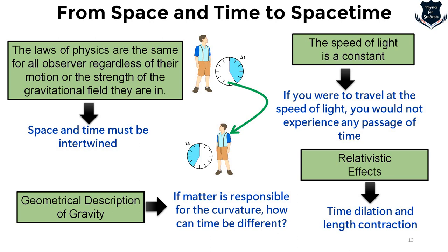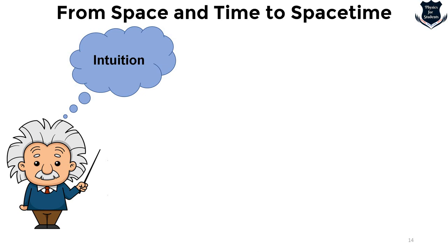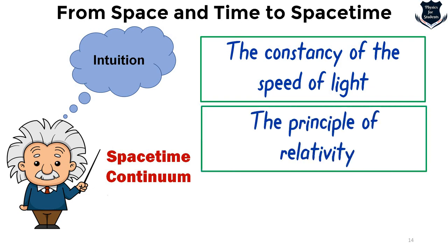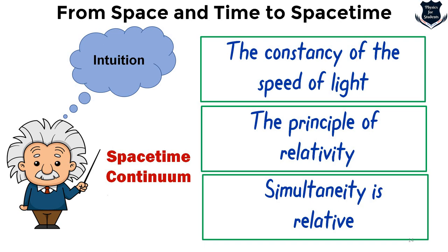The intuitive ideas behind Einstein's space-time continuum were: first, the constancy of the speed of light; second, the principle of relativity; and third, that simultaneity is relative. If frames of reference differ, one person may see an event differently from another. All these intuitions led to the conclusion that space and time cannot be different — they must be united. This is the first breakthrough: the generalization of space and time into a space-time continuum, completed by Einstein through his special theory of relativity.